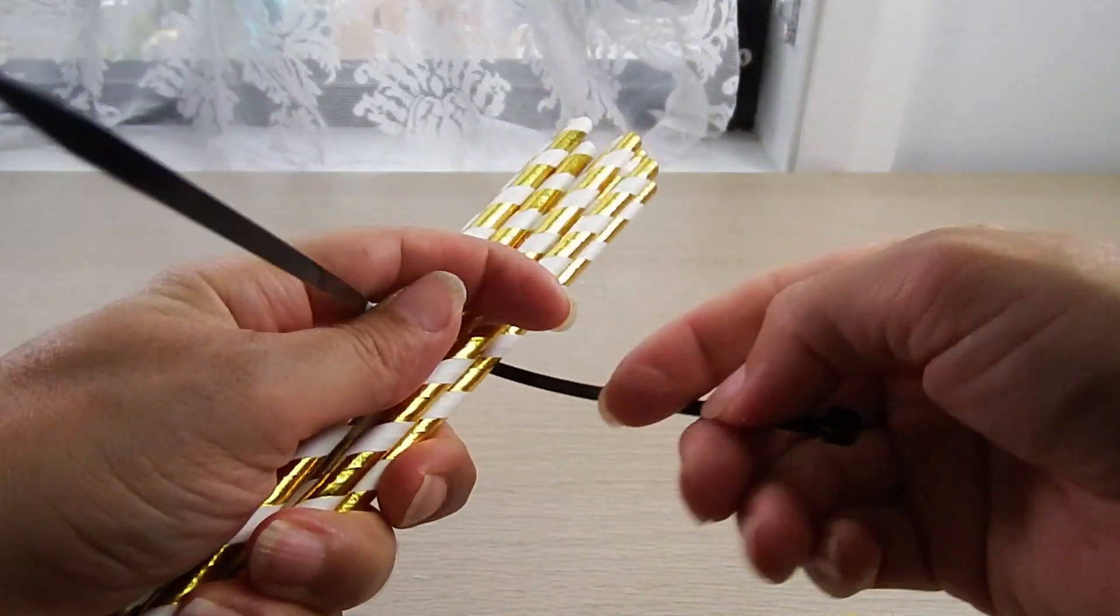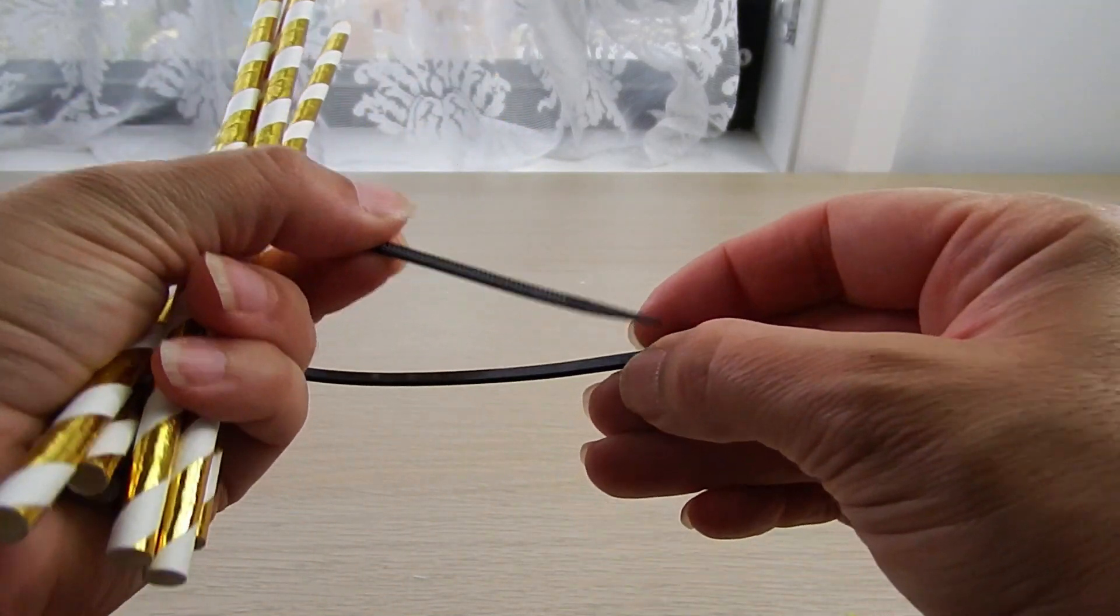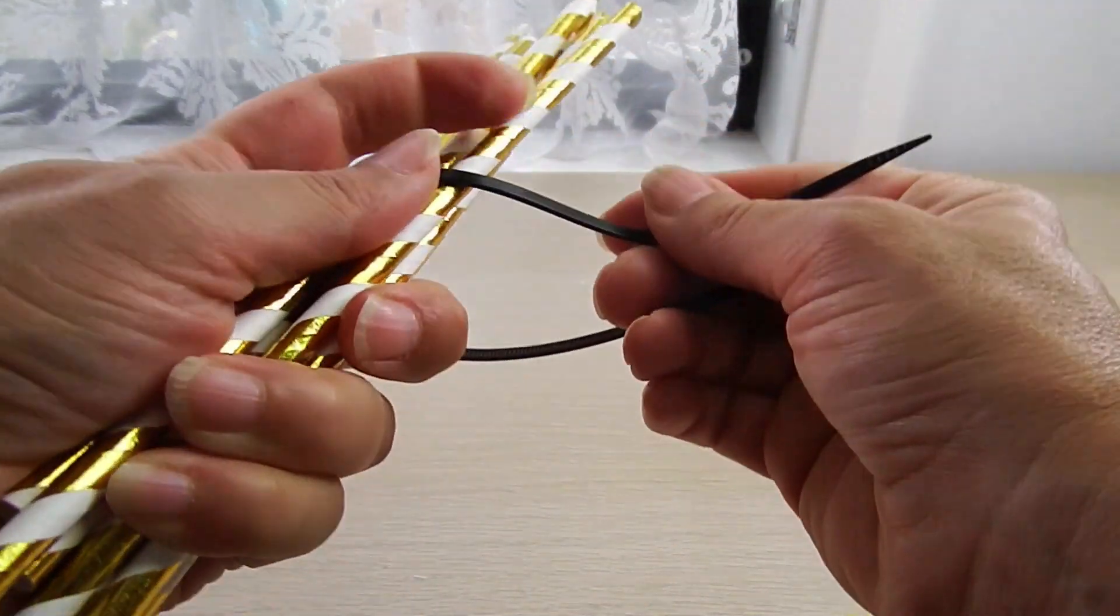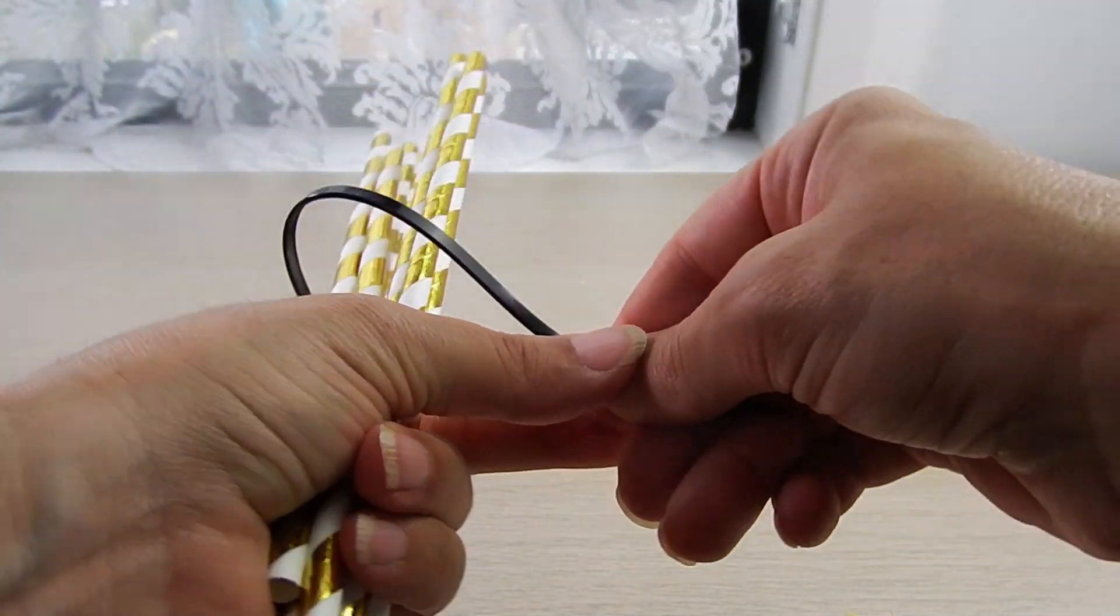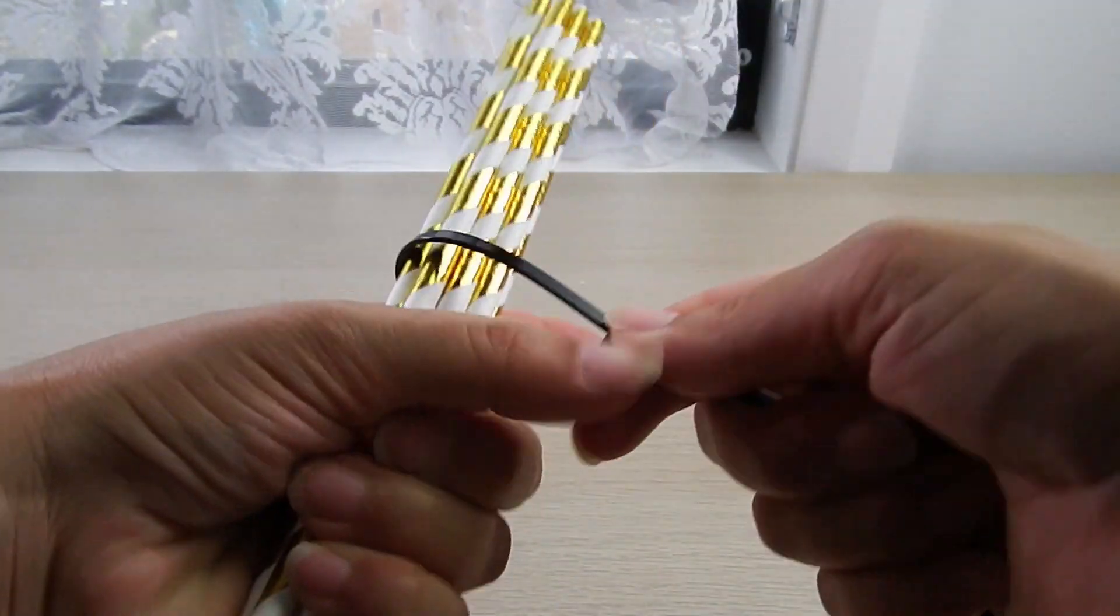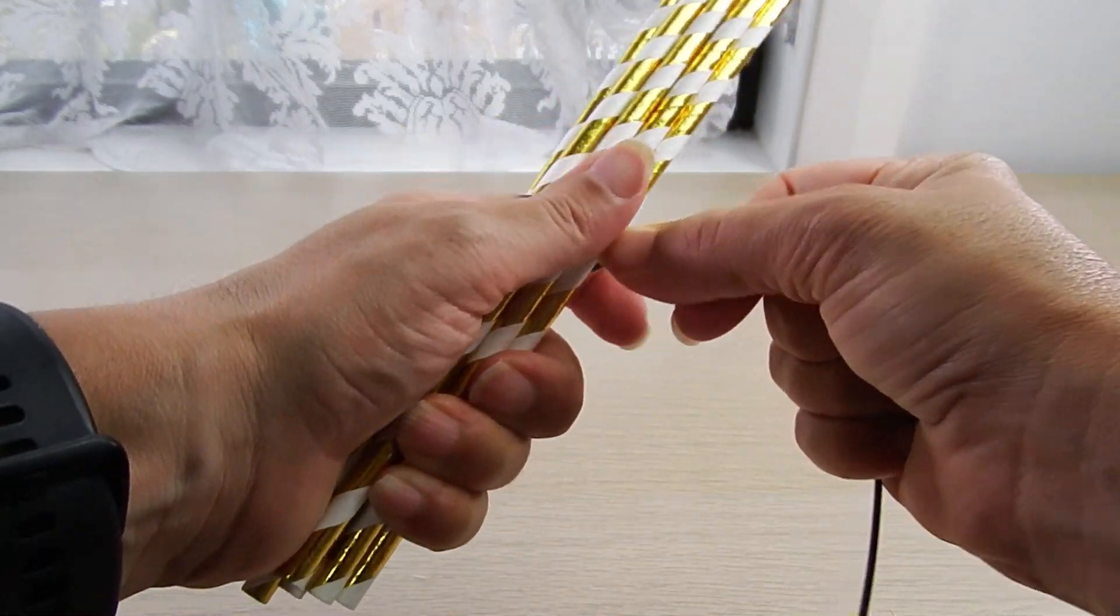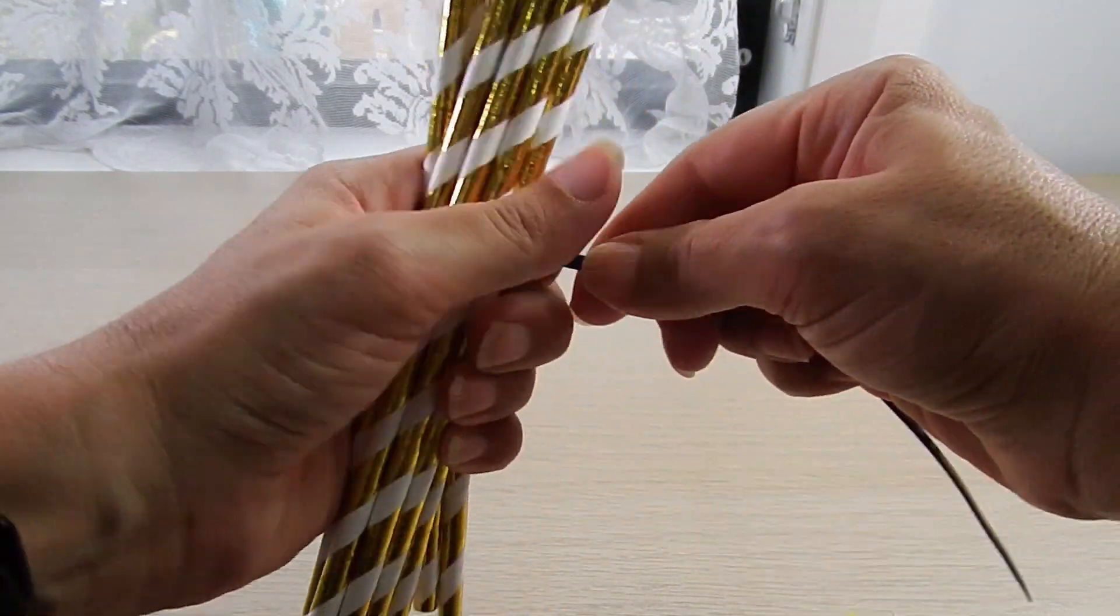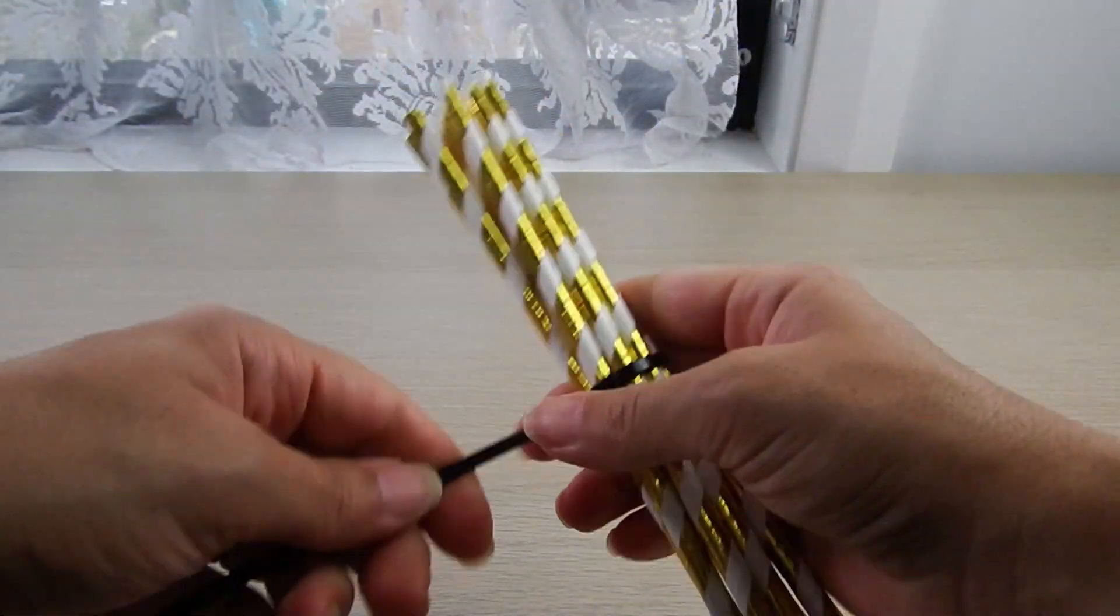So I'm using this pull-out string—I don't know how it's called, you tell me down below if you know—my husband gave it to me. I'm putting it in the middle of the length of my paper straws.